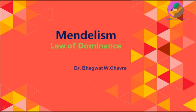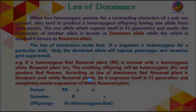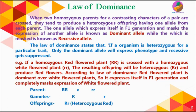Welcome to the course on genetics. In this video we are going to discuss the Law of Dominance. When we select two homozygous parents for a contrasting character and cross them with each other, they produce a heterozygous offspring having one allele from each parent. The allele which expresses itself in the F1 generation and masks the expression of another allele is known as the dominant allele, while the allele which is masked or suppressed is known as the recessive allele.